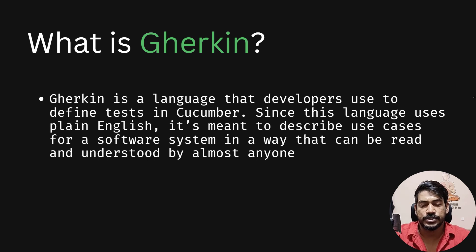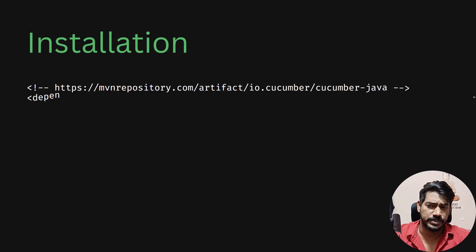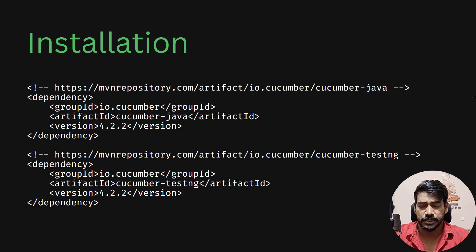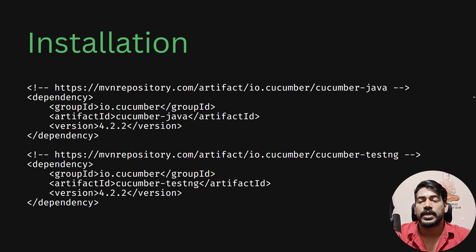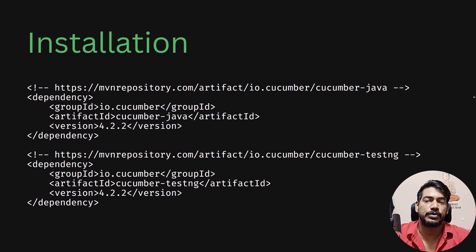We have some Gherkin syntax as well. For example, we have Feature, Background, Scenario, Scenario Outline with Examples, and then the mostly used keywords: Given, When, Then, and But. We'll talk about these syntaxes in more detail in upcoming videos as we work through examples. For versions, I'm going to stick with Selenium 3 — version 3.141.59 — and we are going to use Cucumber version 4.2.2. The latest version is 7, but we're learning the older version first. If you know the basics, you can upgrade to any version. Once comfortable with 4.2.2, we'll try to cover version 6 or 7.